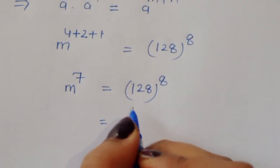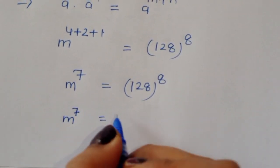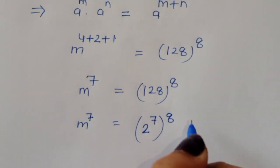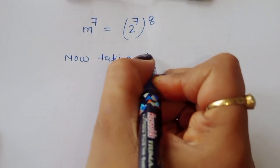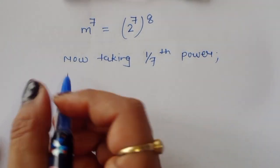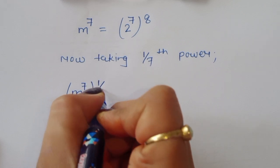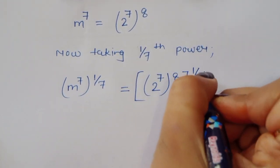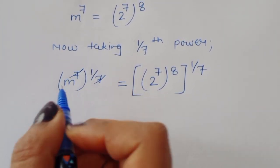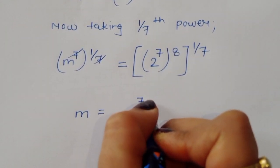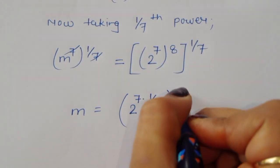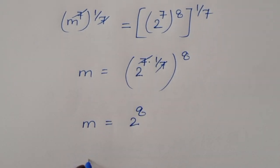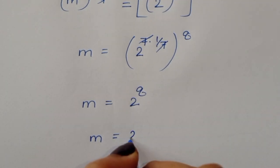Now one thing: if we convert 128 into power form, we get 2 to the power 7. So m to the power 7 is equal to 2 to the power 7, raised to the power 8. Taking 1 over 7 power on both sides, the 7 cancels from this 7, so m is equal to 2 to the power 7 times 1 over 7, times 8. That is 2 to the power 8, which equals 256.